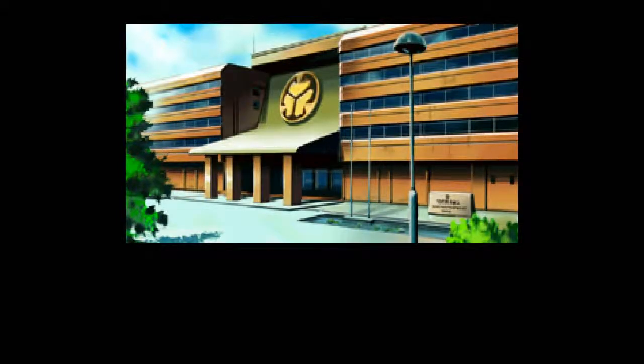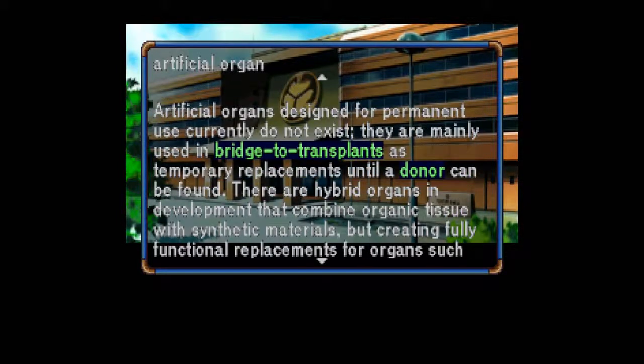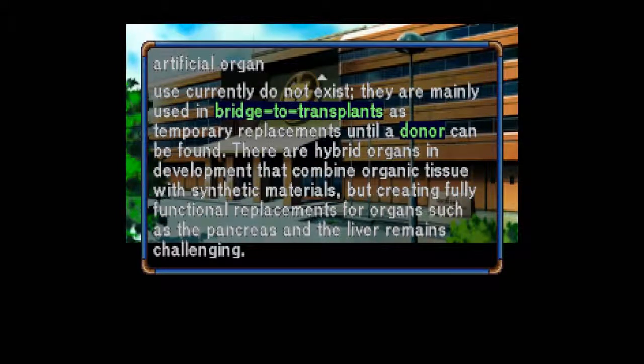Artificial Organ: Any one of a group of man-made organs developed as replacements for human organs, such as the heart and the kidneys. Artificial organs designed for permanent use currently do not exist. They are mainly used in bridge to transplants as temporary replacements until a donor can be found. There are hybrid organs in development that combine organic tissue with synthetic materials, but creating fully functional replacements for organs such as the pancreas and the liver remains challenging.